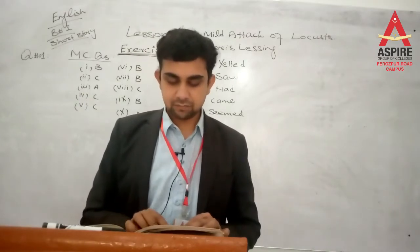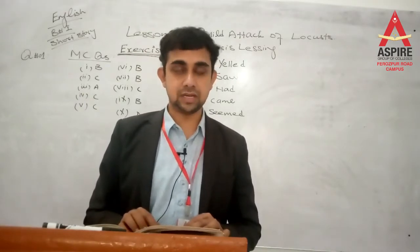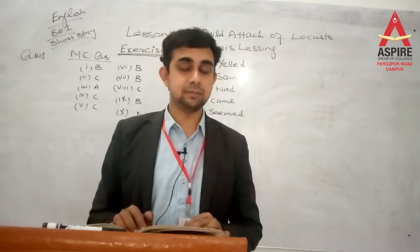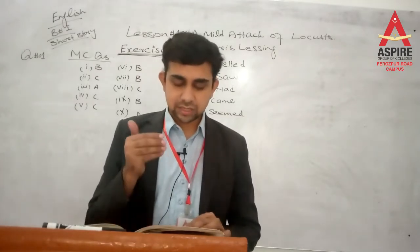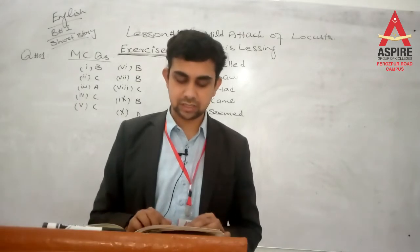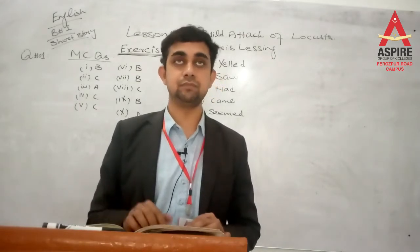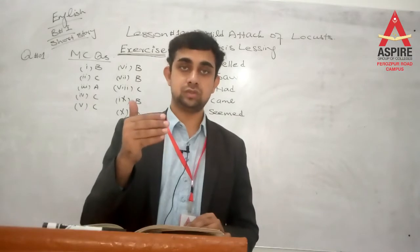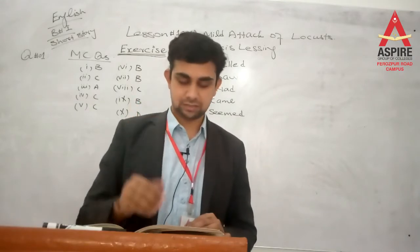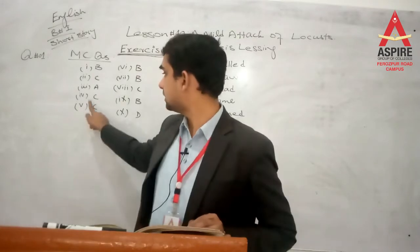Number 4: 'They neither went bankrupt nor got very rich' — means that they were? The correct option is C: Enjoying a moderate living — درمیانے درجے کی زندگی، یعنی ایک متوازن اور مودبل زندگی گزار رہے تھے. So number 4's answer is C.